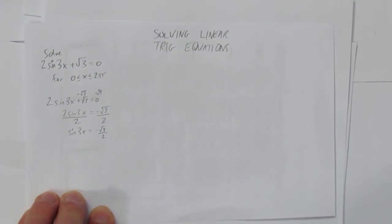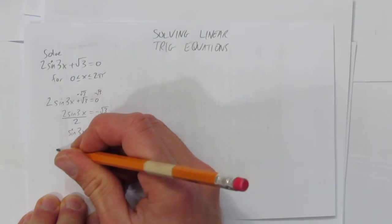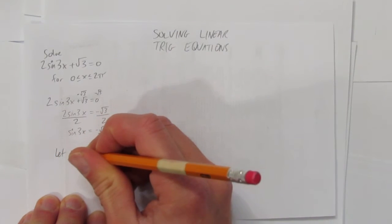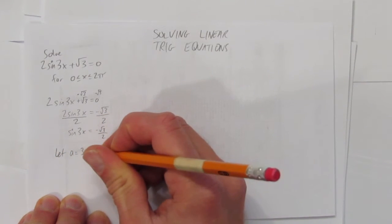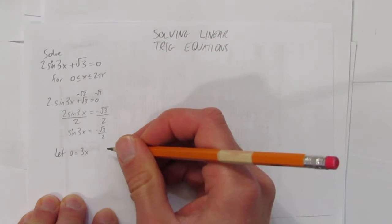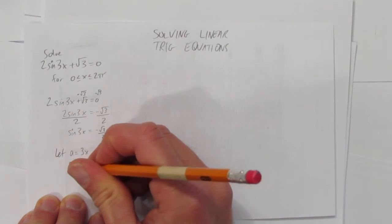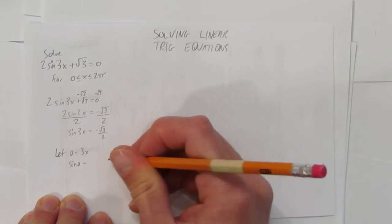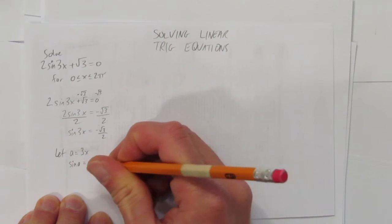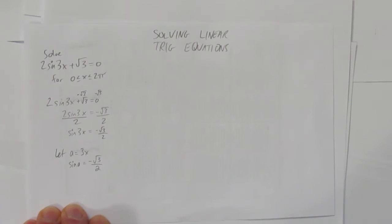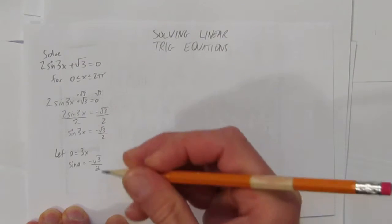There's different ways to go about solving this. What I like to do is say, let some letter like a equal 3x. That's nice because then I just have sin(a) = -√3/2, and that's going to be a lot easier to work with.